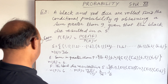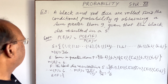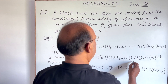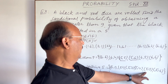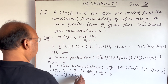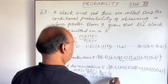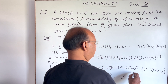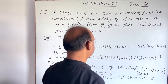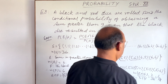Now we need to find the numerator: probability of E intersection F. The elements common to both E and F must satisfy both conditions — sum greater than 9 and black die equal to 5. Those common elements are (5,5) and (5,6). So n(E∩F) = 2, and therefore P(E∩F) = 2/36 = 1/18.